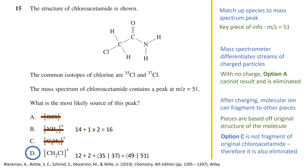If we had started by determining the mass of each option first, options A and C would also have fit the mass to charge ratio of 51, and we would have eliminated only option B initially. That concludes this video. Please tune in for the next set of videos from this exam. Thanks for watching and see you next time.